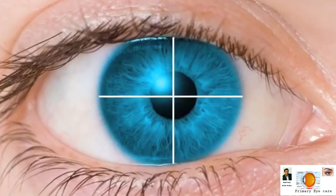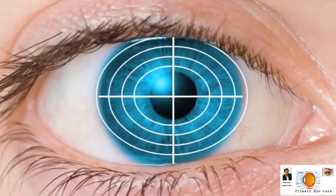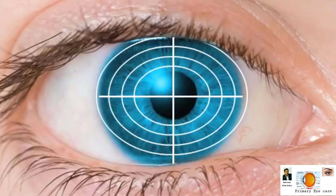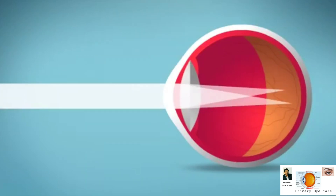What happens exactly is that our cornea is not perfectly spherical. One meridian is more curved compared to another meridian. In a normal eye, light rays come in and focus on the retina, but in an astigmatic eye, light focuses on two different points.